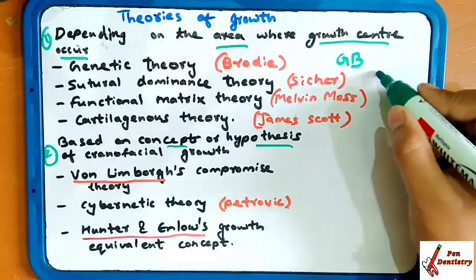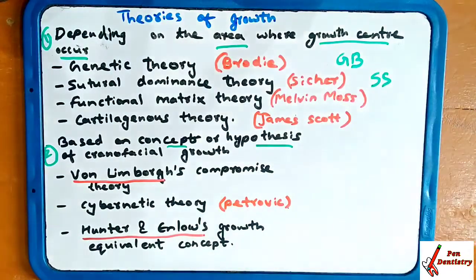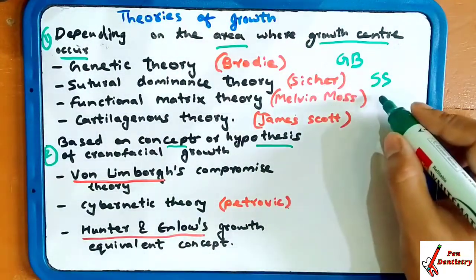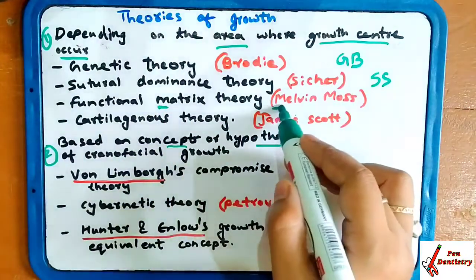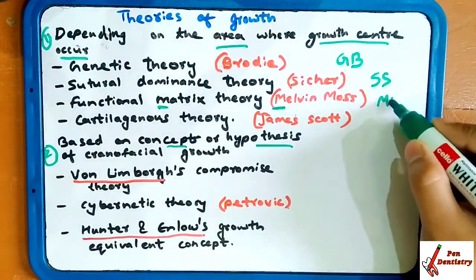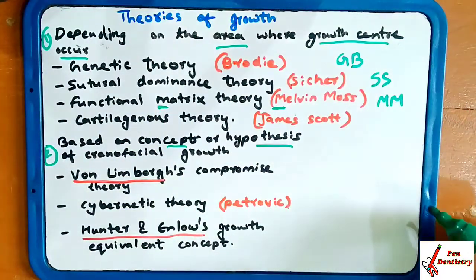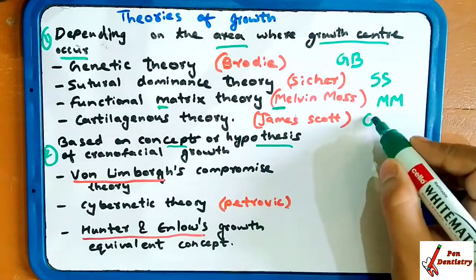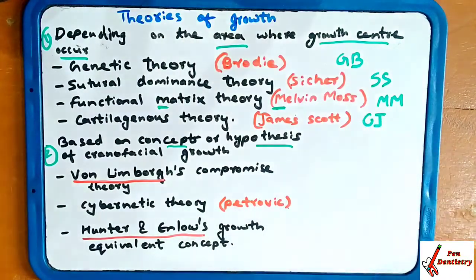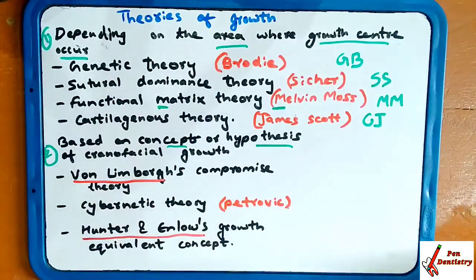Next is sutural dominance theory — SS — sutural dominance theory by Sischer. Then functional matrix theory by Melvin Moss, and cartilaginous theory by James Scott — remember as CJ. These four theories were on the area where growth center occurs.